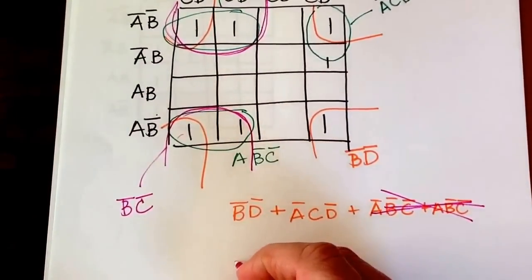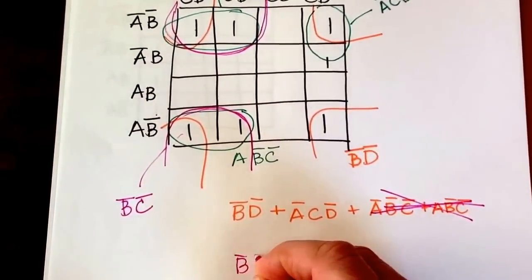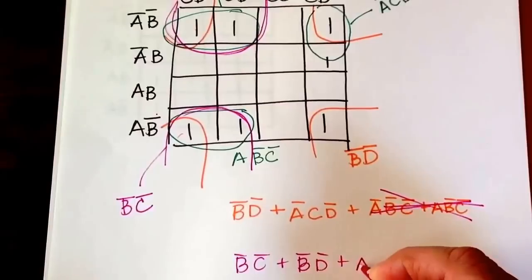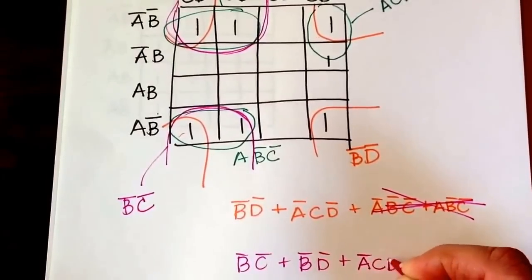So the actual answer here would be not B, not C, or not B, not D, or not A, and C, and not D.